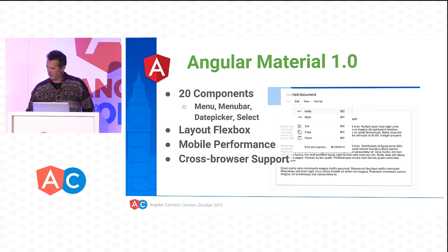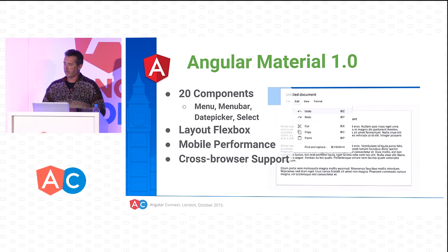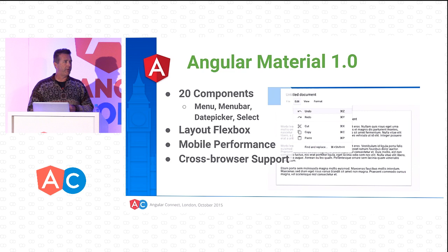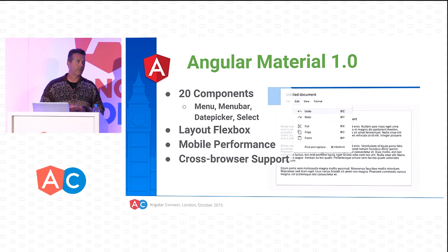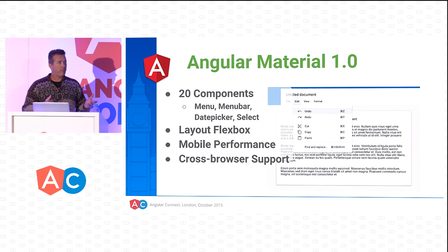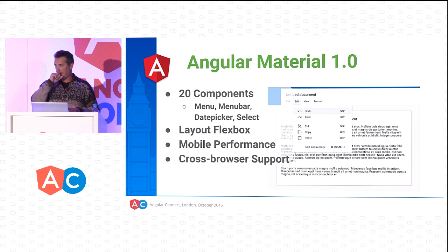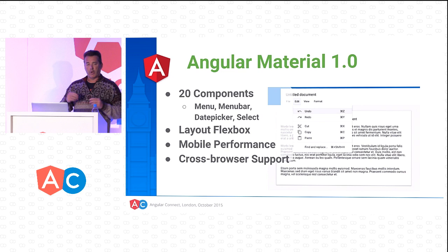Angular Material 1 will include over 20 components. We've recently released the menu and menu bar component, the date picker, and the select component. We've added improvements to our Flexbox layout grid system. Today we've actually released the release candidate — it's available on the CDN, tagged, and ready for you to start using. We also have mobile performance improvements, including sidestepping the 350-millisecond delay on taps, so Angular Material apps will respond much faster on mobile. We'll continue our work for cross-browser support.